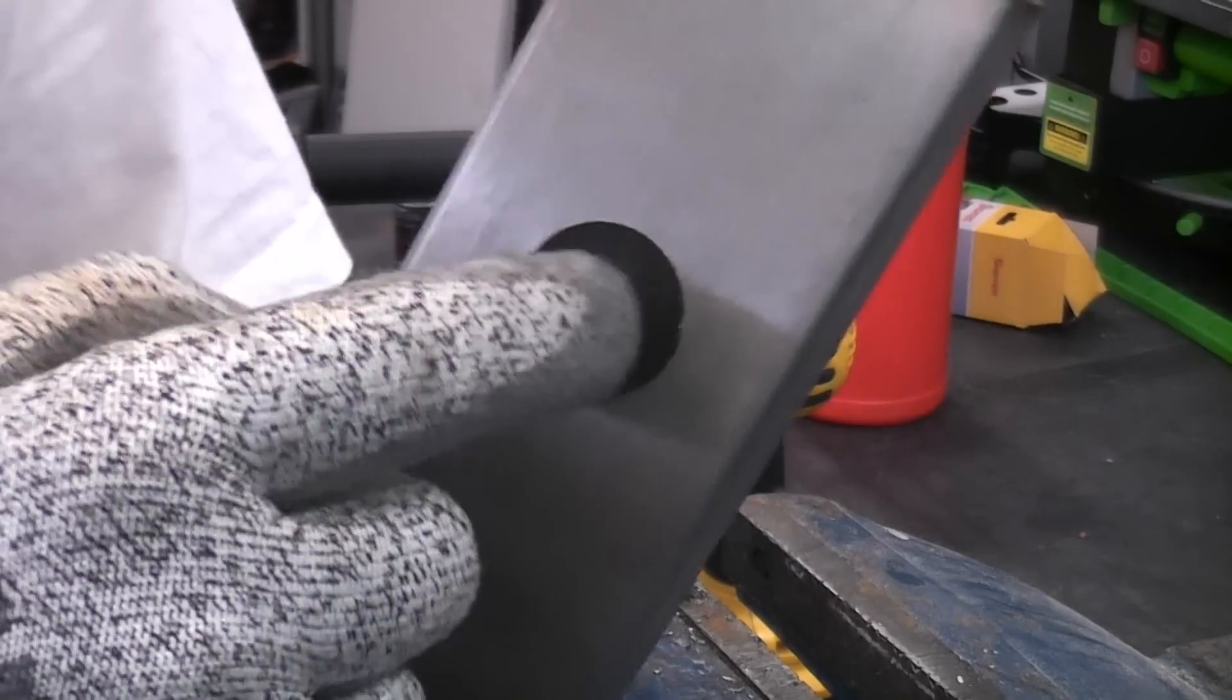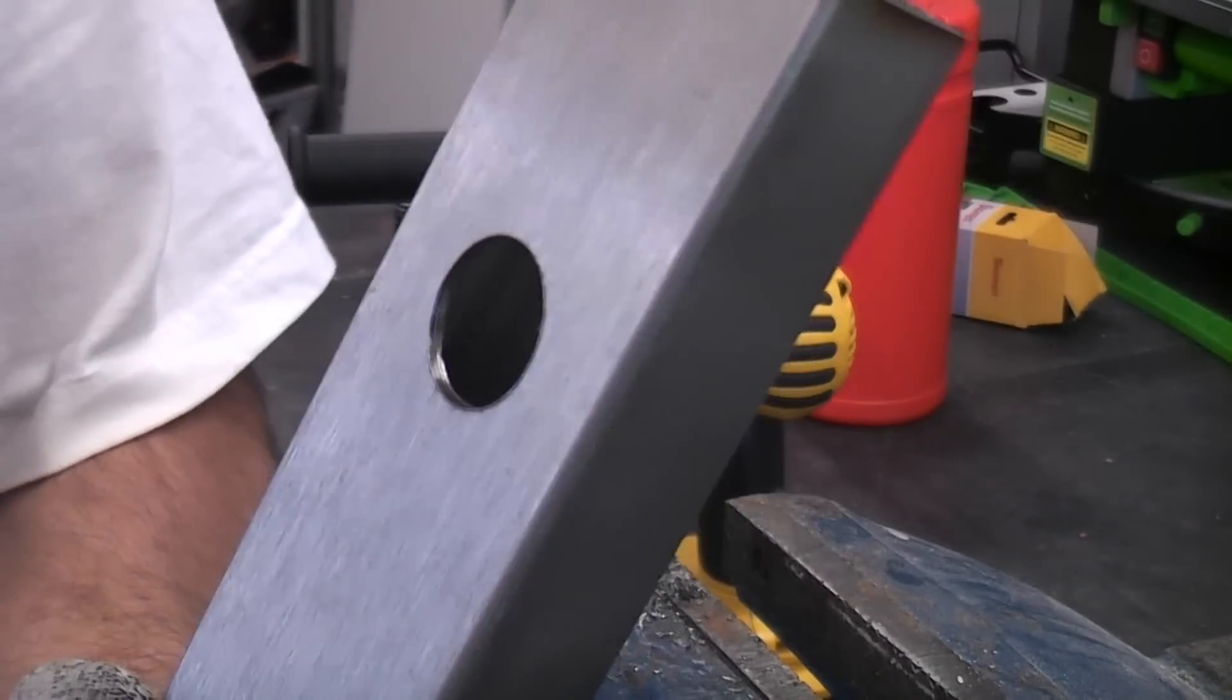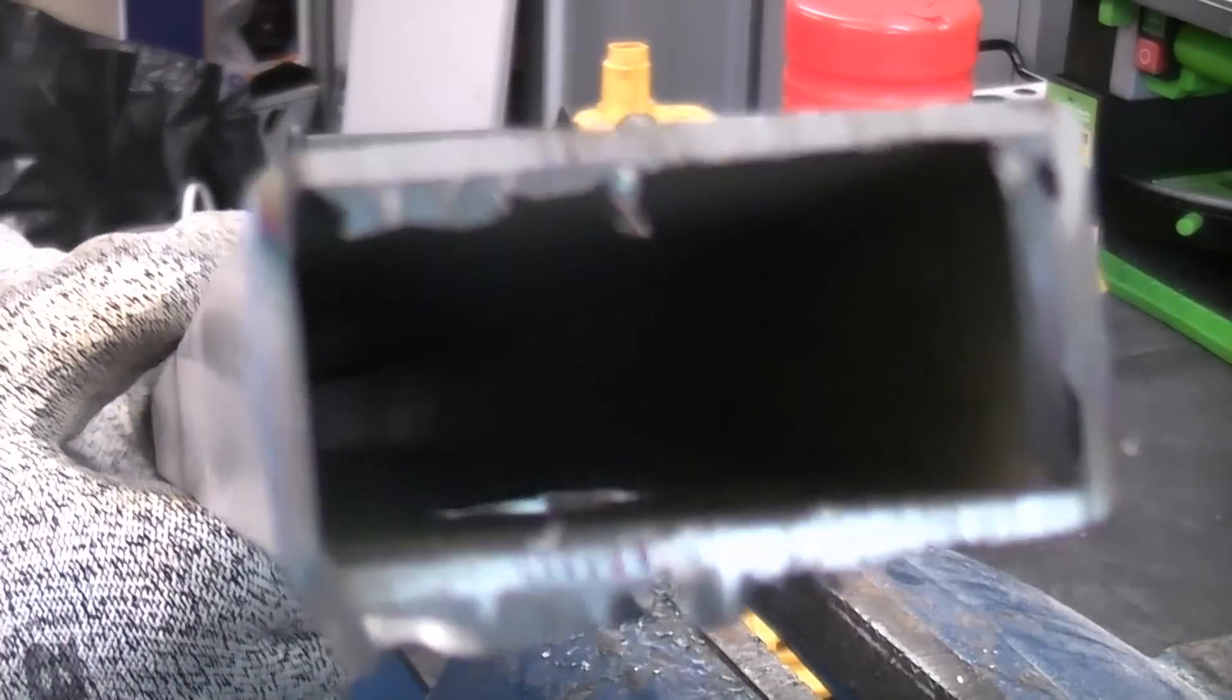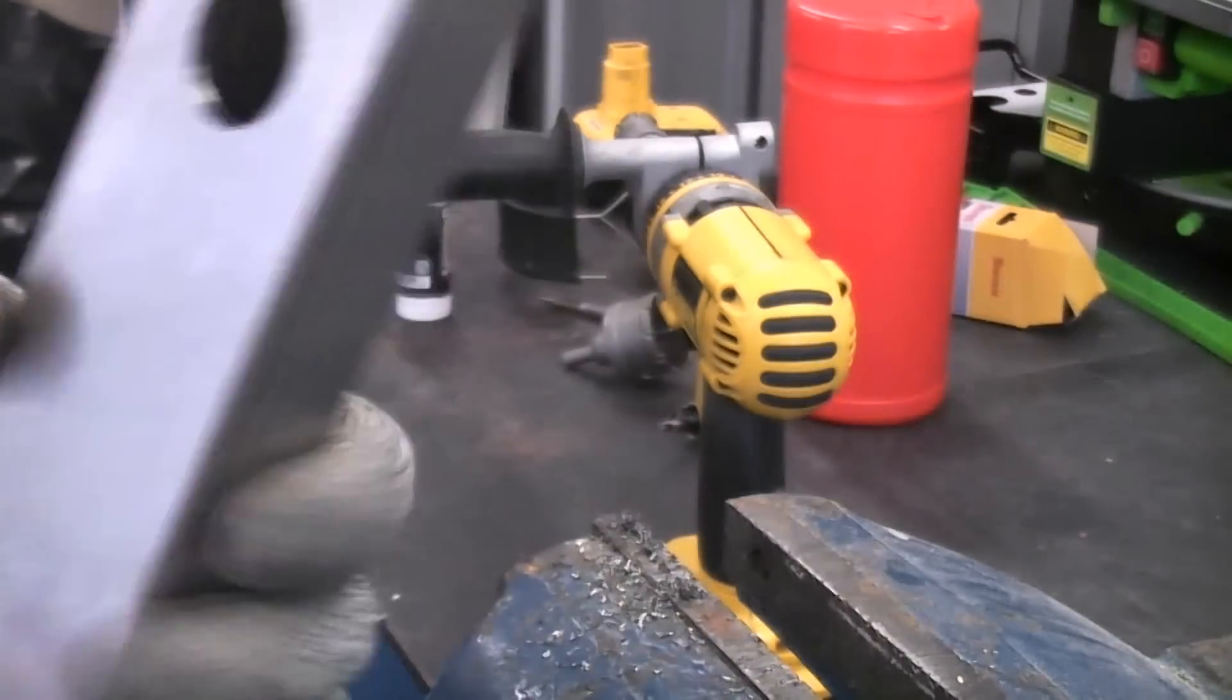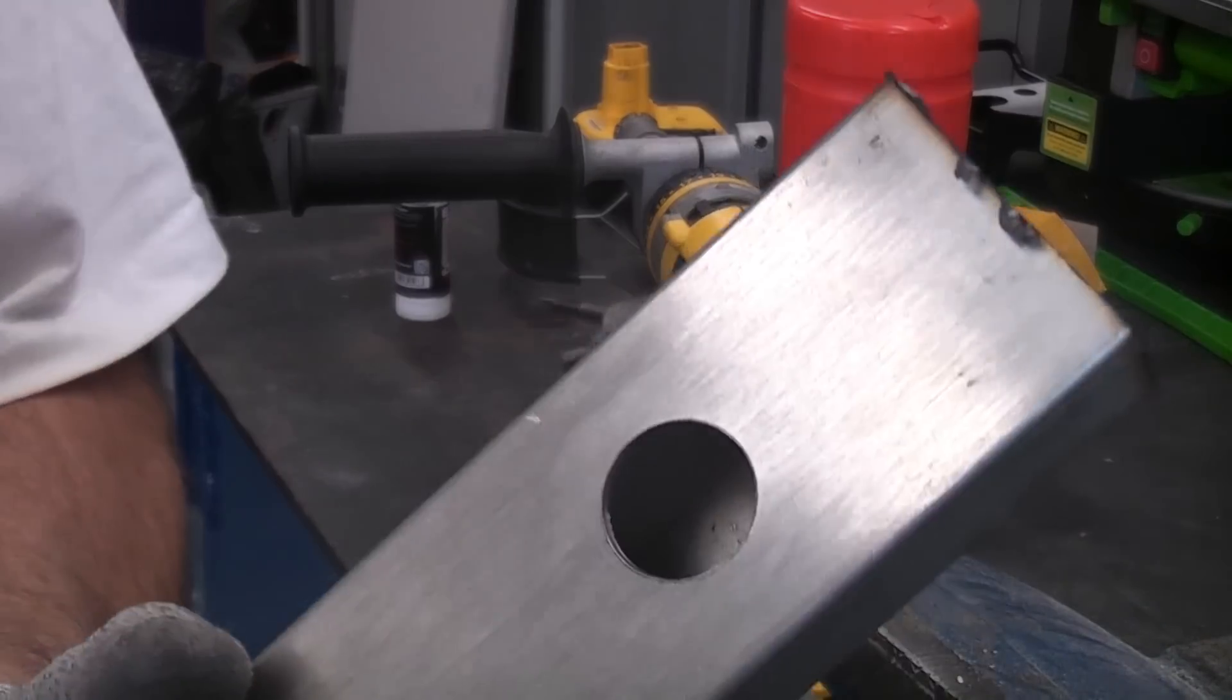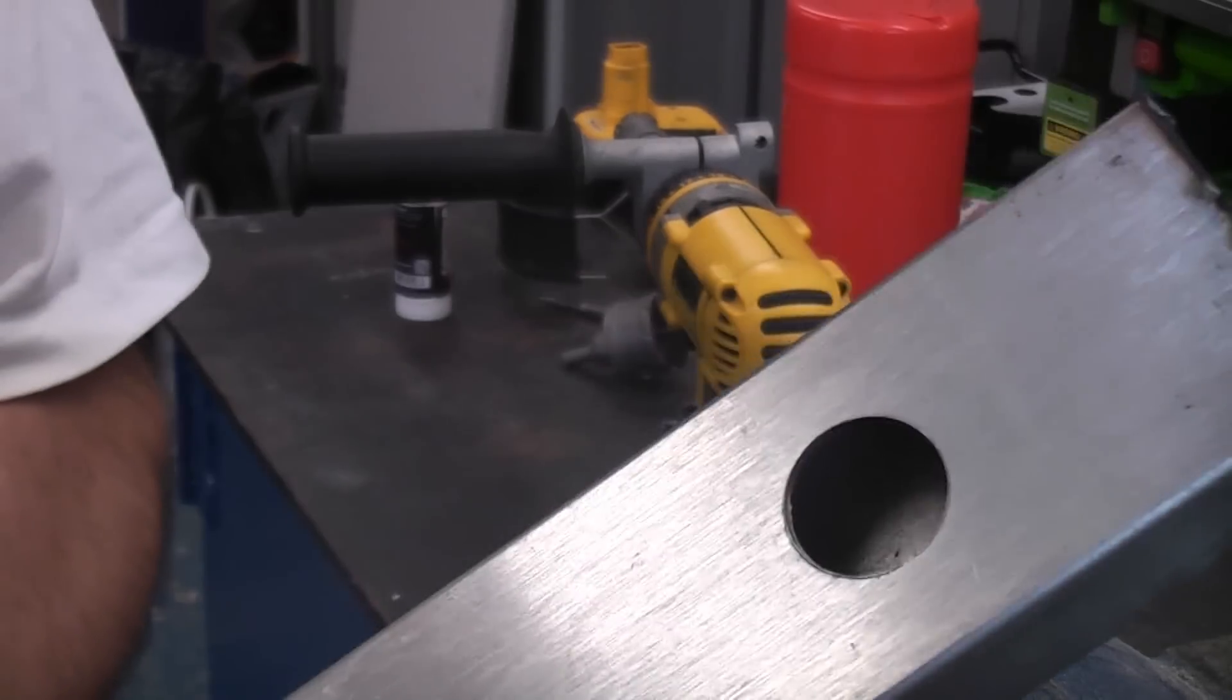You can see that has cut a clean 1 inch hole in that 316 stainless steel which is approximately 2mm thick wall thickness. So that is a very tough piece of metal to drill. If you tried doing that with a traditional hole saw you would really struggle, you'd probably just burn it out.